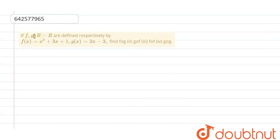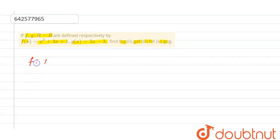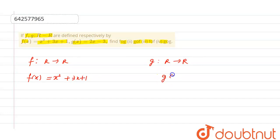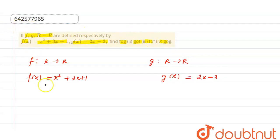So, let's start with this question. We have a question in which f and g are defined from R to R. f(x) is defined as x squared plus 3x plus 1, and g(x) is equal to 2x minus 3. We need to calculate fog, gof, fof, and gog.